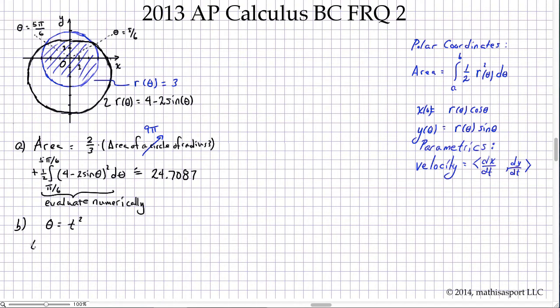First of all, the x-coordinate—this is our conversion from polar coordinates to Cartesian coordinates—the x-coordinate as a function of t equals r, and in place of theta we're going to put t squared, times the cosine, and again in place of theta we're going to put t squared. Now we're asked when does that coordinate equal negative one for t between one and two, and the endpoints are allowed.